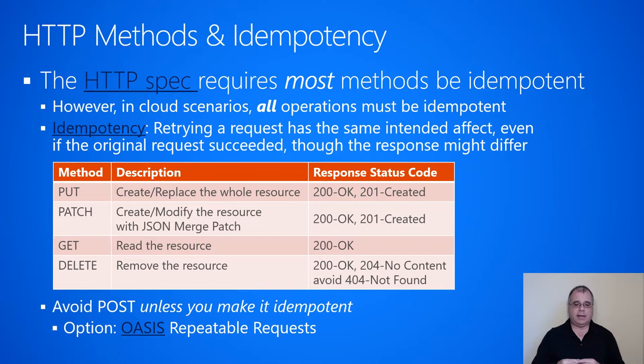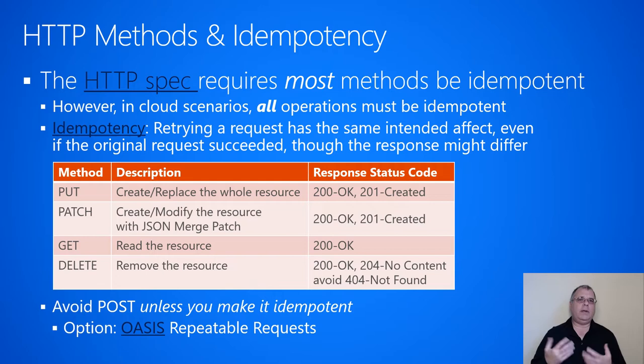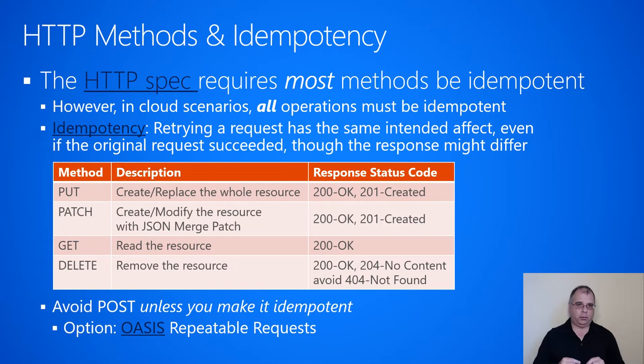So, what is the definition of idempotency? It means that retrying a request has the same intended effect, even if the original request already succeeded — although the response might differ. The HTTP methods we recommend services use are PUT, PATCH, GET, and DELETE. All of these, the HTTP specification says, must be idempotent. Patch is technically defined as not having to be idempotent, but we recommend using PATCH with a JSON merge patch payload, which makes it idempotent.